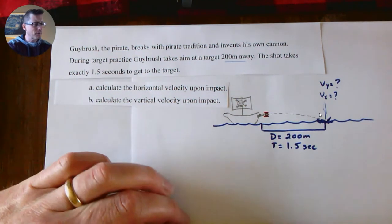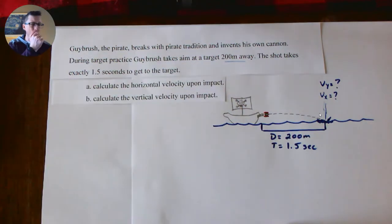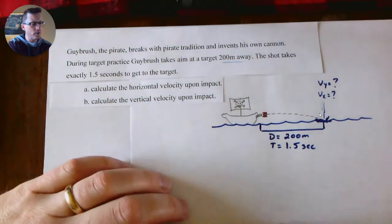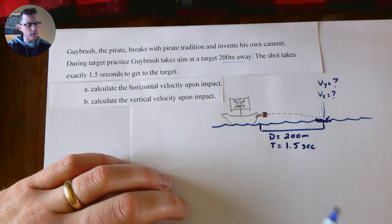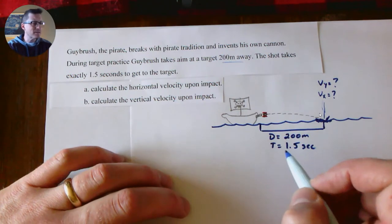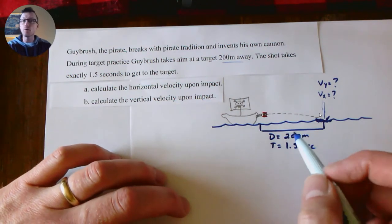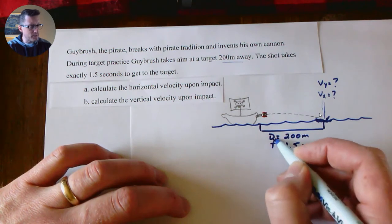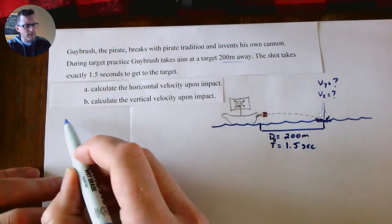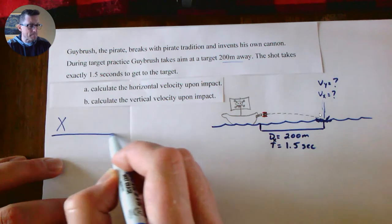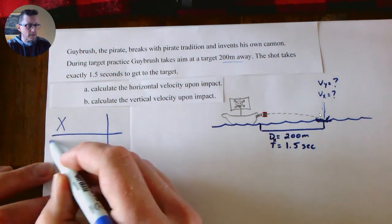We're going to look at how can we use what we have here—how can we figure that information out if we only are given the distance and the time. Now, key here: first thing we want to do is figure out for this distance, what kind of number is it? Is it an x number or is it a y number? It turns out it's an x number because it's going 200 meters sideways away from the pirate ship.